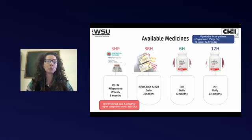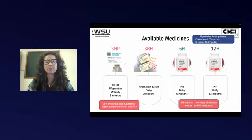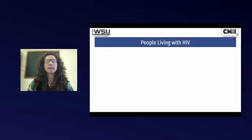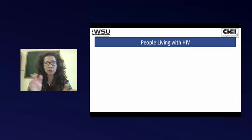Looking at the four options, in a large public sector program the 3HP (INH-rifapentin combination) would be ideal, with much higher completion rates being the biggest advantage, though accessibility may be an issue. The 12-month INH and 6-month INH still have very low adverse event rates and are very good long-term options, the main challenge being keeping patients on treatment for 12 months. Now let's look at different scenarios, starting with people living with HIV — those who have not been exposed to anybody with TB and have just been diagnosed.